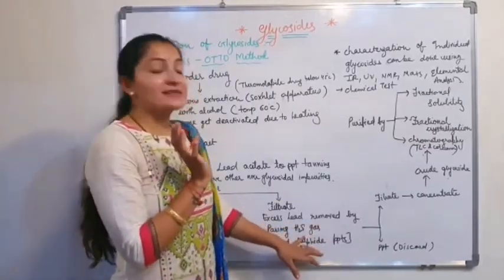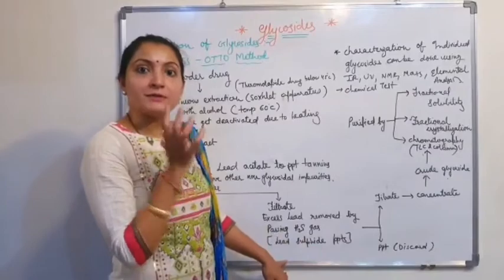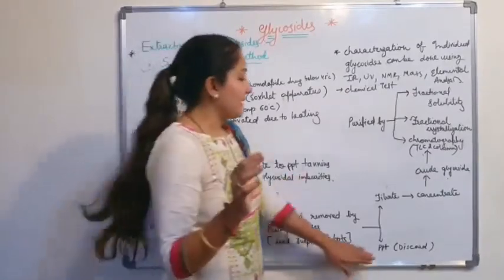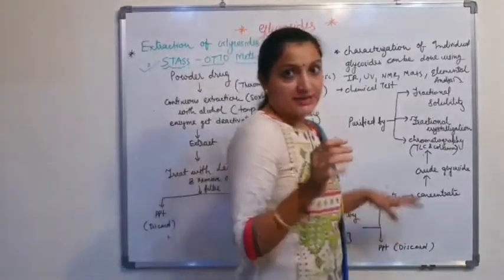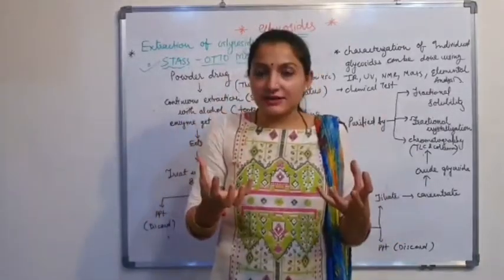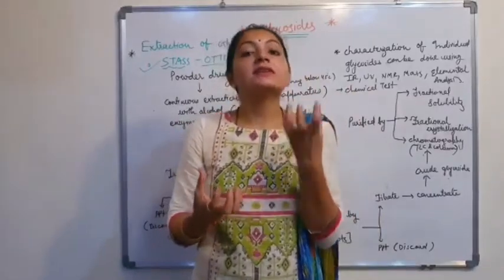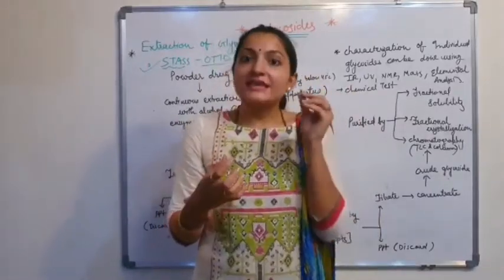The lead, in the presence of H2S, produces lead sulfide, which precipitates out. By filtration, we remove the precipitate and take the filtrate. This filtrate is then concentrated to get crude glycoside as a residue.